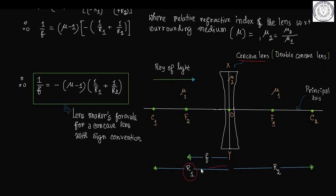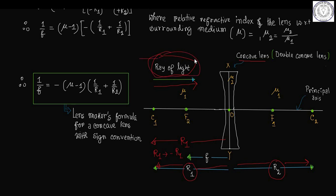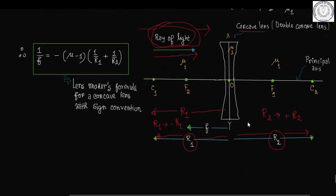The radius of curvature of the first surface R1 is measured towards the left, but the ray of light is traveling towards the right. That means R1 is anti-parallel to the ray of light, which is why R1 tends to minus R1. The radius of curvature of the second surface R2 is measured in the same direction as the ray of light, towards the right, so R2 tends to plus R2.